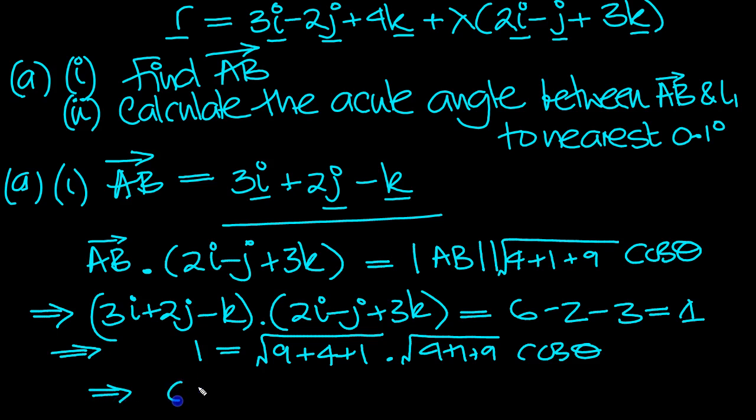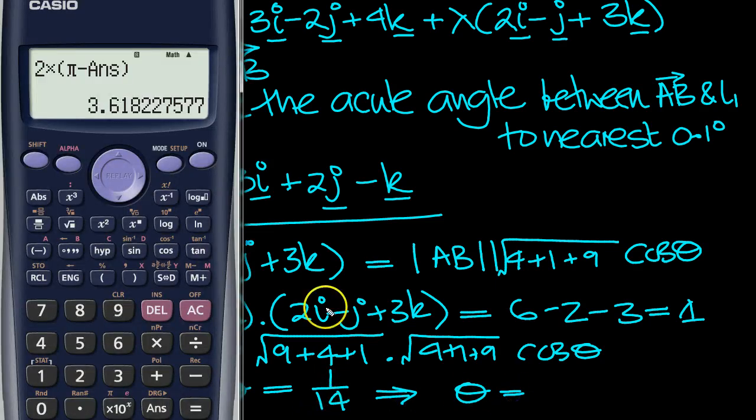So that tells us what cos theta is then. Reading from right to left, this is root 14, this is root 14, so that's 14. So move the 14 from times to divide. Writing it down from right to left, 1 over 14. So theta is equal to shift cos 1 over 14 in degrees mode.